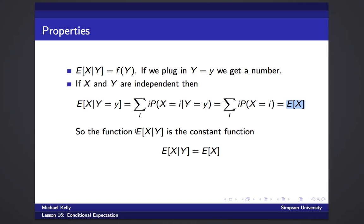And viewing this as a function, e of x given y, it's just a constant because if they're independent, x takes values with the same probabilities no matter what value y is. So e of x conditioned on y is just the constant function, e of x.